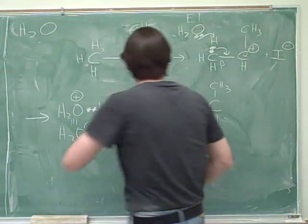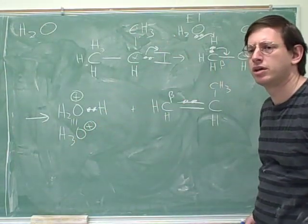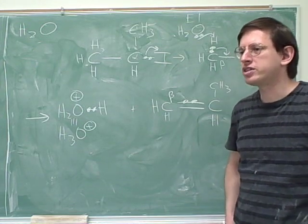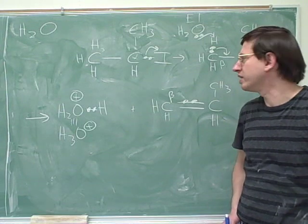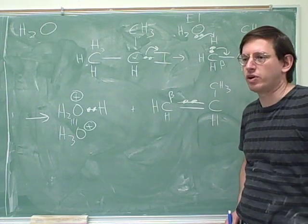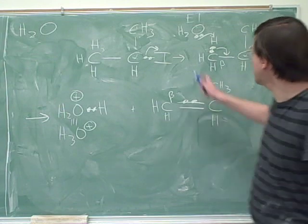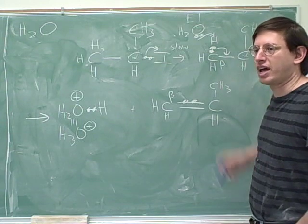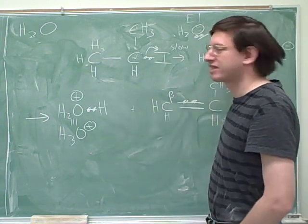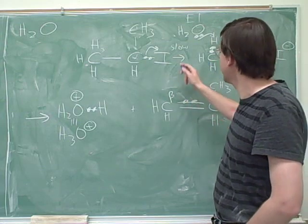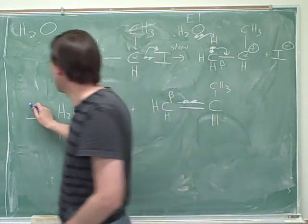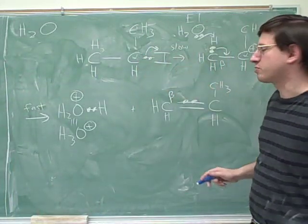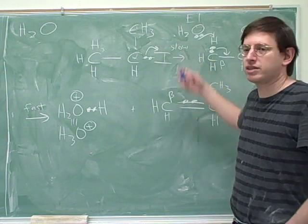What happened in the first step? The leaving group left. Here's a trick question: which of these is the rate determining step — the first one or the second one? The first. This is the slow step, because this is the one that forms the carbocation. It's difficult to form the carbocation; it's easy to unform the carbocation. This is the slow step, and this is the fast step over here. The iodide leaving is the rate determining step.